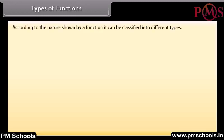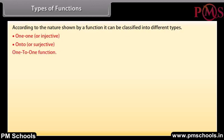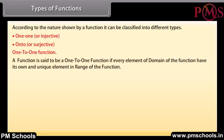Types of functions. According to the nature shown by a function, it can be classified into different types: one-one or injective, and onto or surjective. A function is said to be a one-one function if every element of the domain of the function has its own unique element in the range of the function.